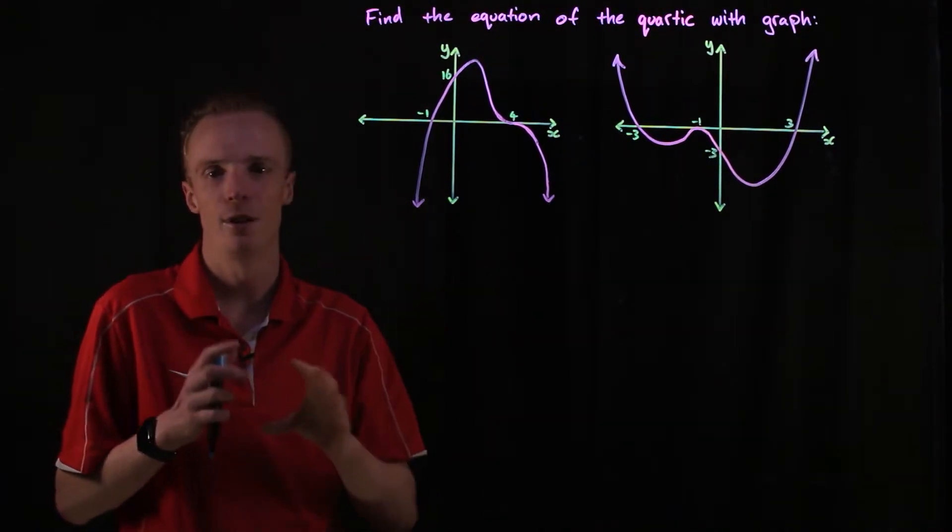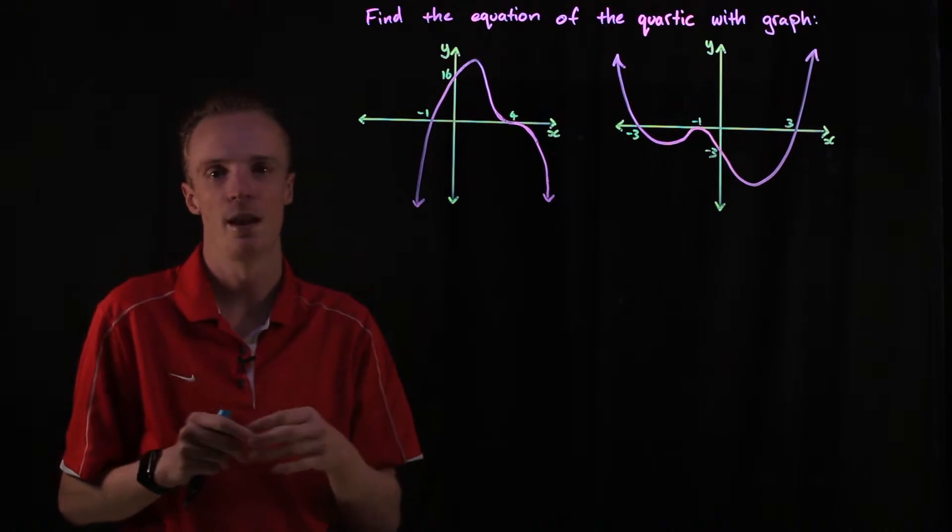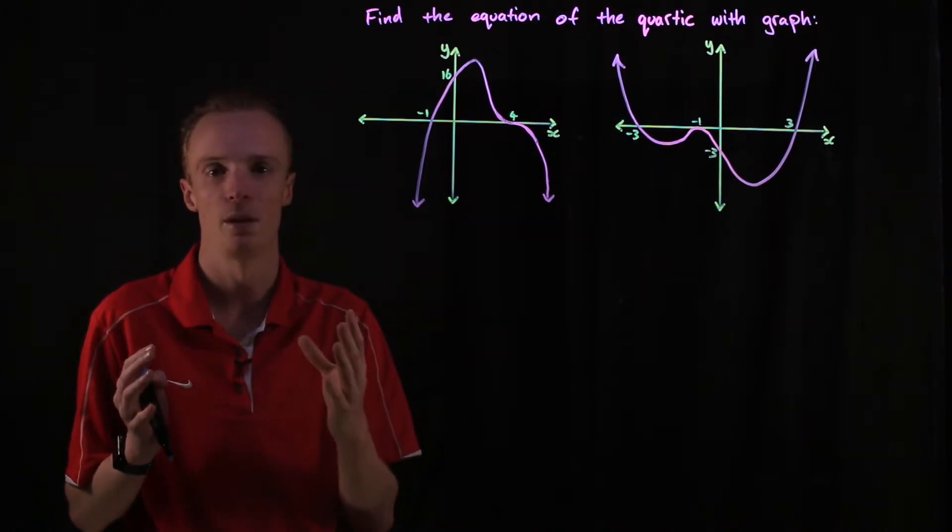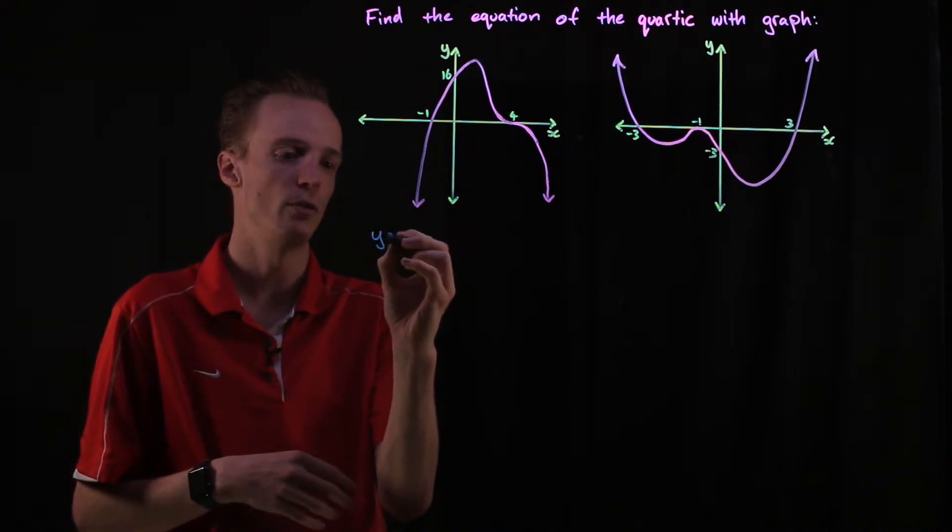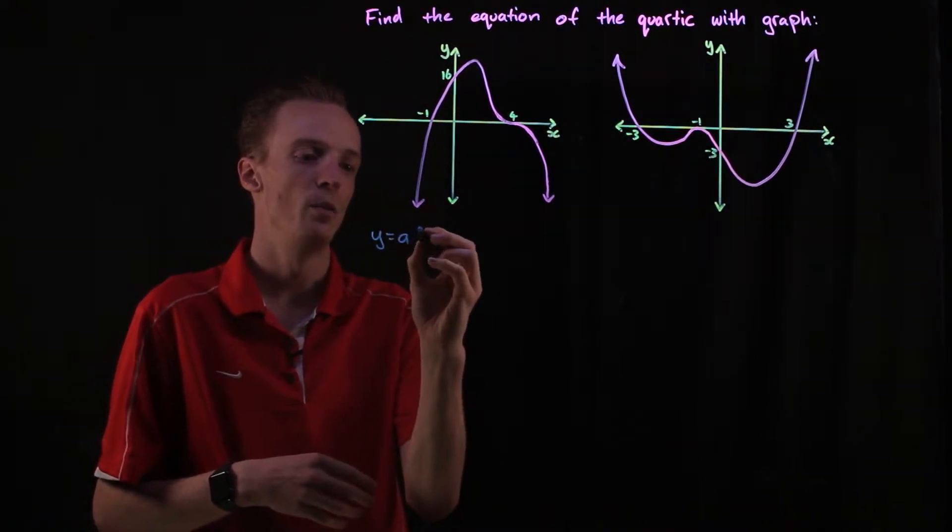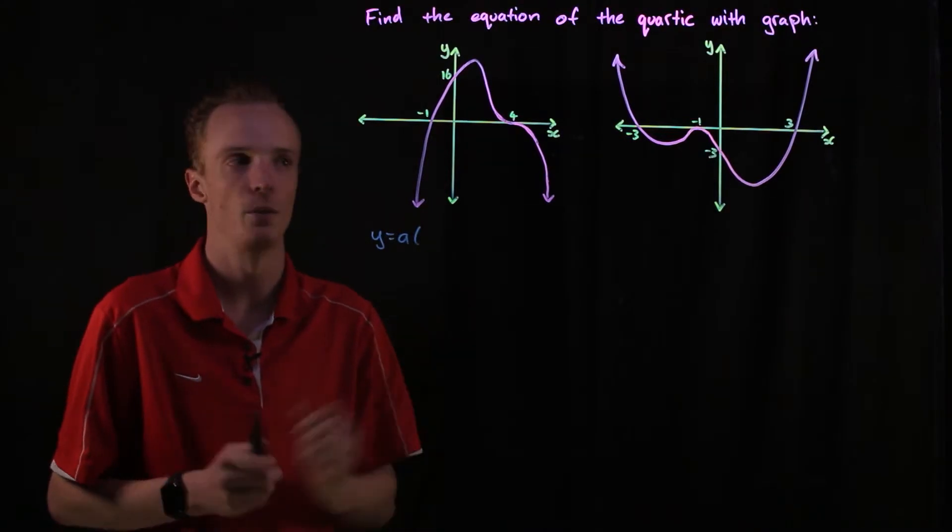With each of these, you follow a similar process that we did with quadratics and cubics. We start by representing just a general cubic polynomial where we include the factors that we've got.